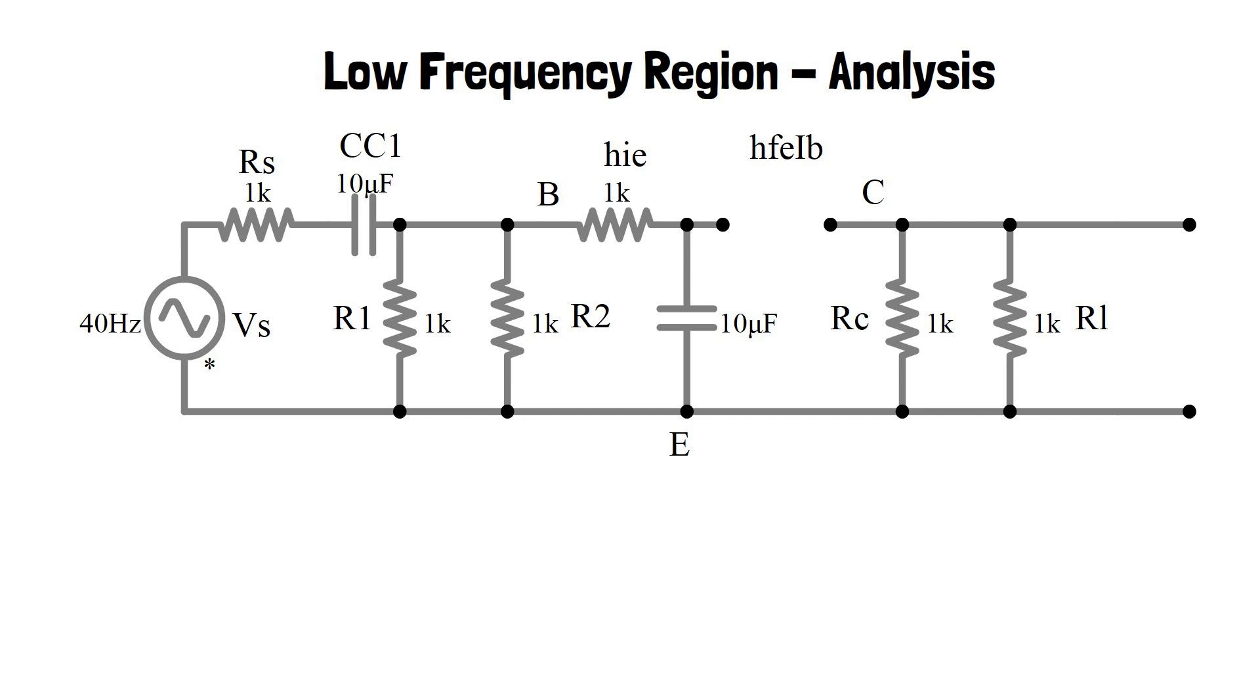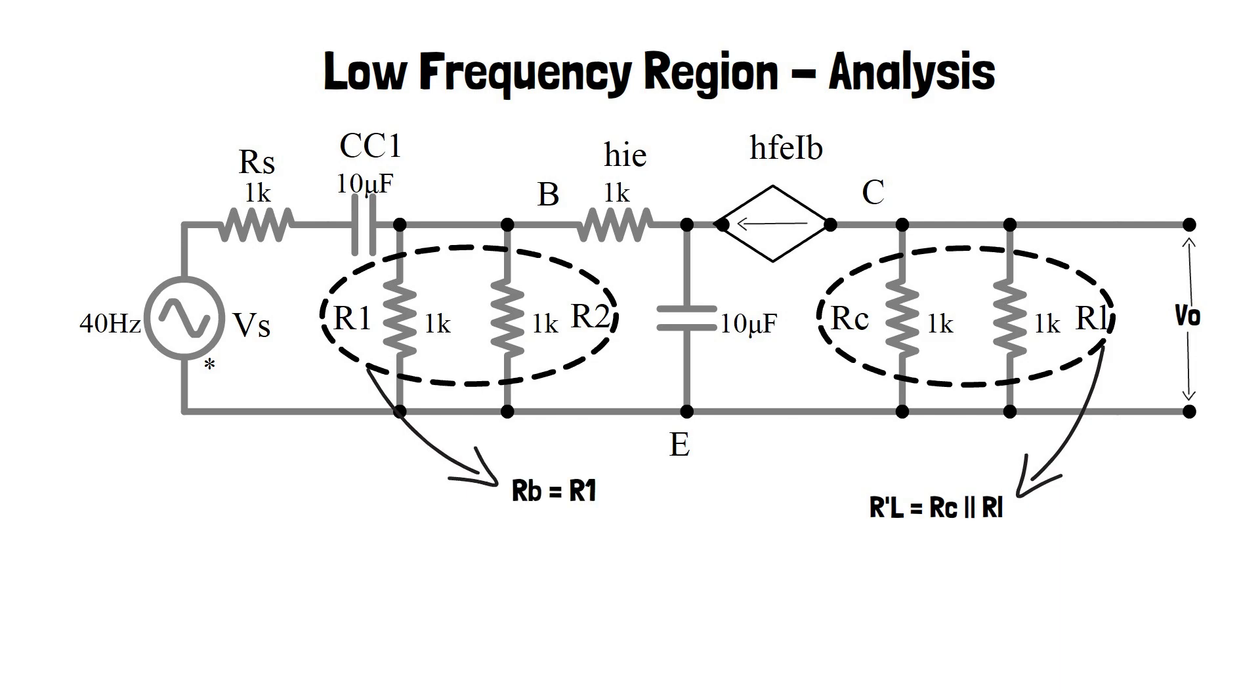Now let's analyze low frequency region. In low frequency region, picofarad capacitors act as open circuit and microfarad capacitors are considered one at a time. For AC analysis, short circuit the DC voltage source. Replace BJT with approximate H parameter model. When CE is considered, the effect due to CC1 and CC2 are neglected. Hence we get the following figure.